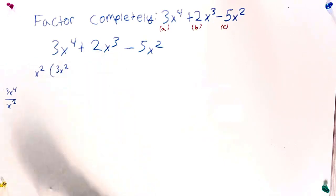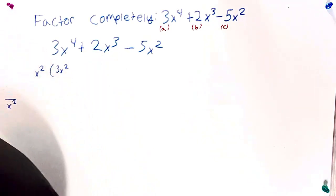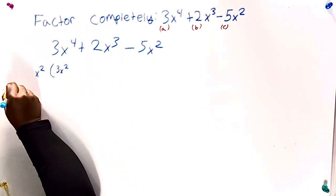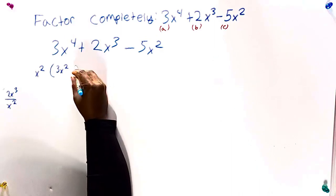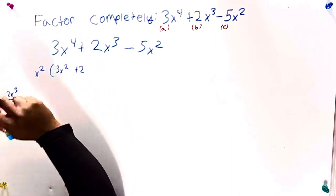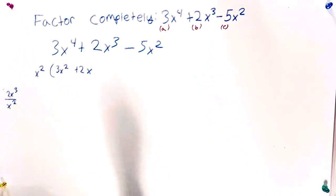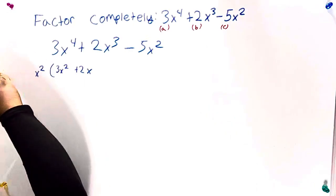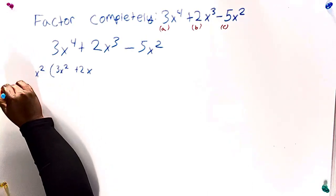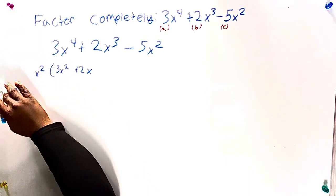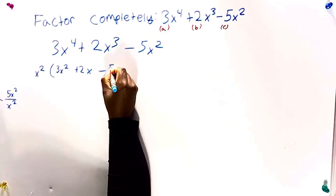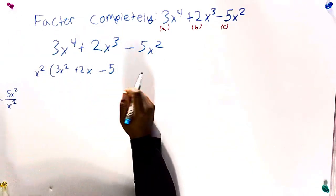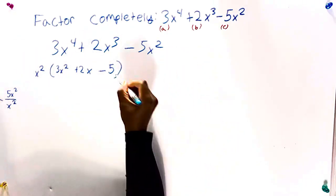So then now you do the same thing over there. Now we need to simplify this. So we have a 2x to the third here. Put it over that same x squared that you took out. So now we have 2 divided by 1. That should give us positive 2. x to the third divided by x to the second. And that should just give us x. Then now we do the same thing here. But keep in mind, we have a negative 5x squared. We still follow the same procedures. Just put a negative 5x squared. Negative 5 divided by positive 1. That should just give us a negative 5.